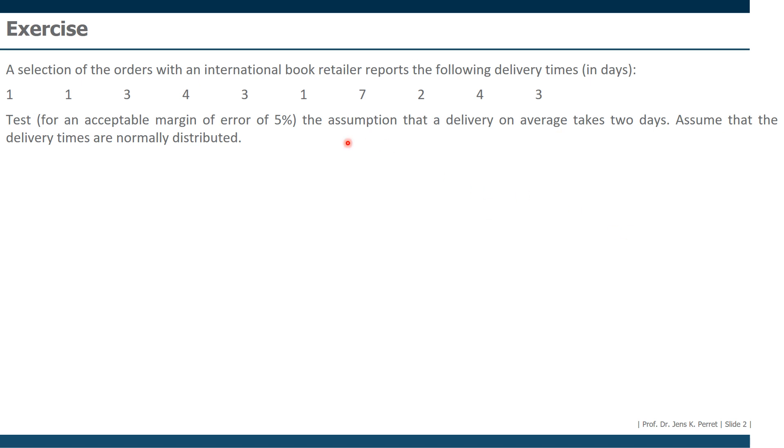It's nice to know the margin of error and that we have a normal distribution, but what we're missing is the standard deviation or the variance. So we have to calculate this on our own. This means we have to perform a t-test, especially since we have less than 30 or 50 observations.